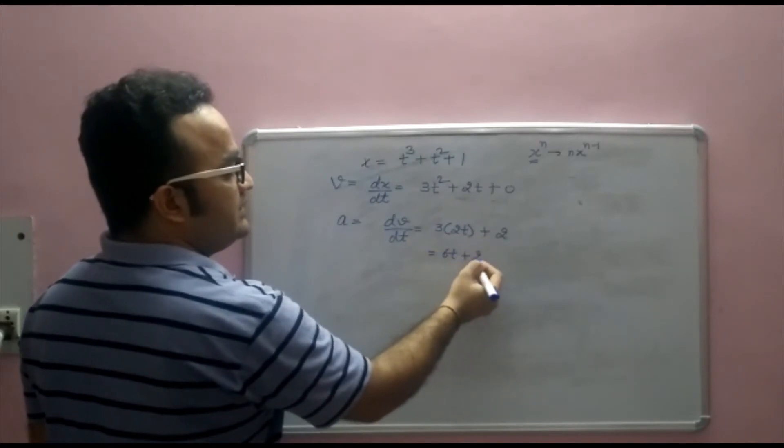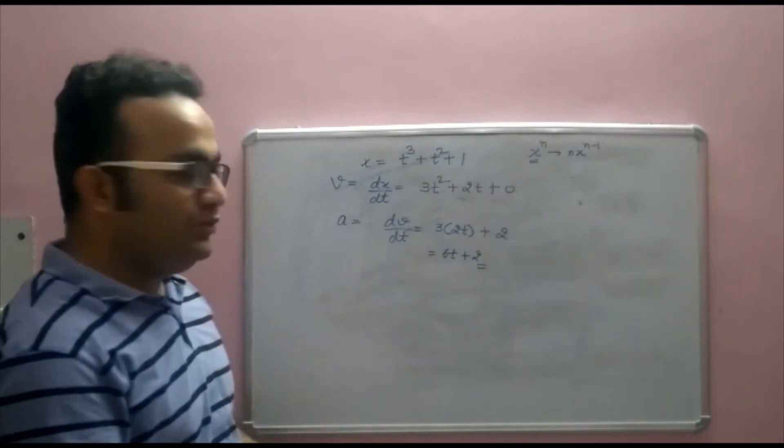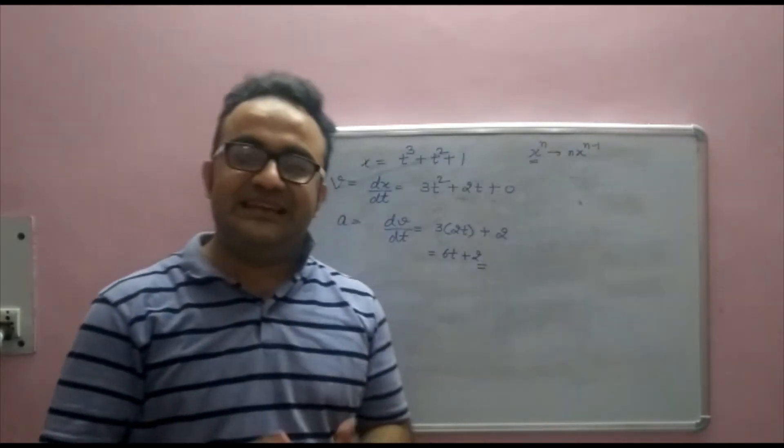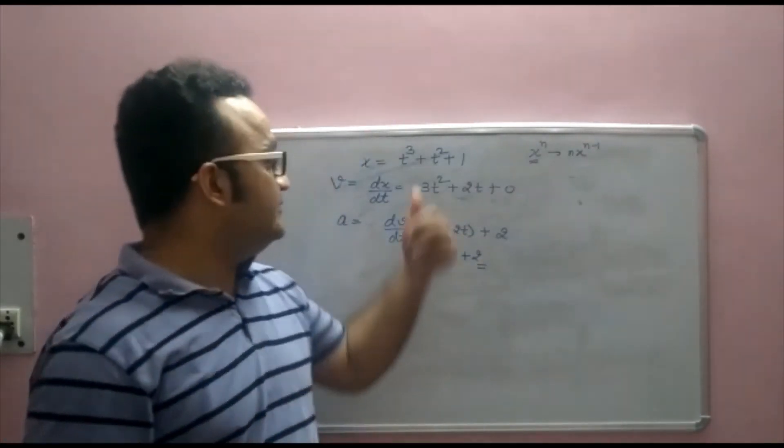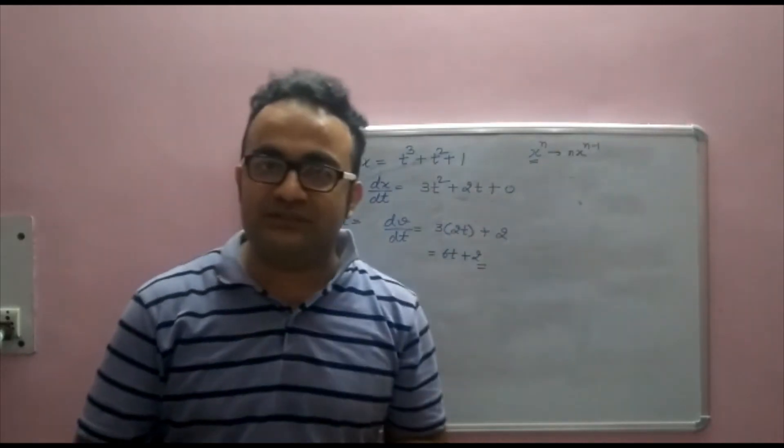because the differentiation of t is 1 so that you get 6t plus 2. So that's the formula for calculating velocity and acceleration which is dx by dt and dv by dt so that we can solve for a and v using calculus.